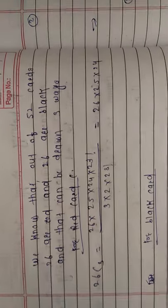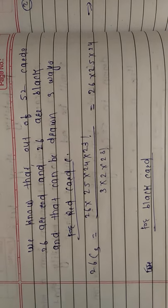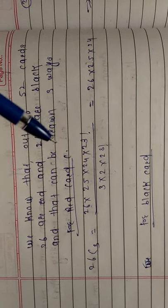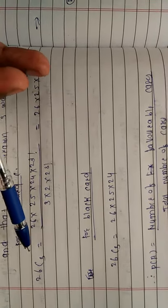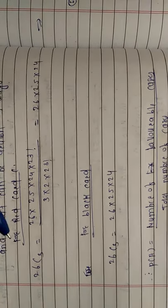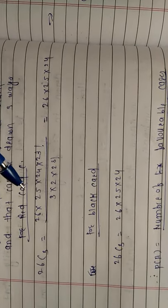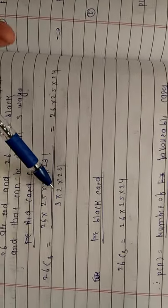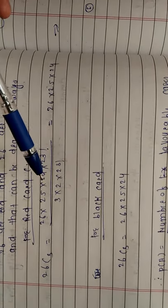The main target is to find the probability of that event. There are 26 cards that are red and 26 cards that are black. Firstly, we will find the number of ways to draw 3 cards from the 26 red cards, which is 26C3. So 26C3 is calculated as 26 × 25 × 24 divided by 3 × 2 × 1. By simplifying that calculation, you get the result. This is for the red cards.